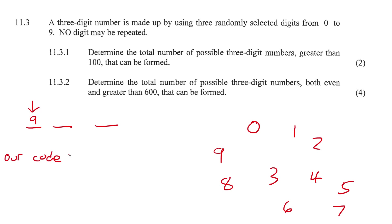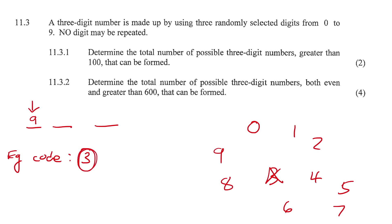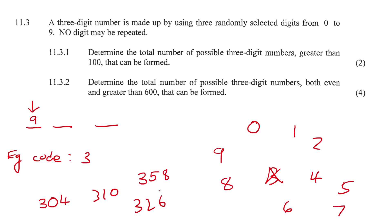Let's say for our first number - just as an example - we use the number three. A common problem learners have in this chapter is thinking we chose nine as our first digit. We're looking at how many different numbers could we have chosen - we could have chosen any one except zero, so there were nine options. For the next position, we can use zero or any number except three, since no digit may be repeated. So there are still nine options for the second position, because now we can use zero.